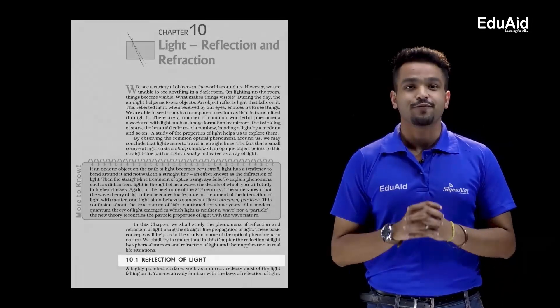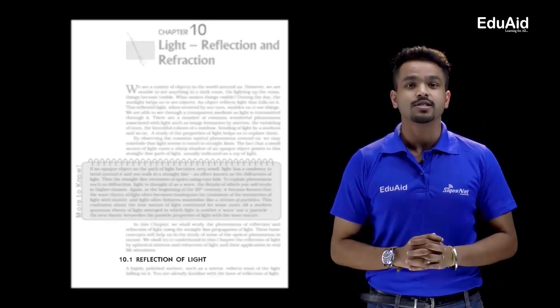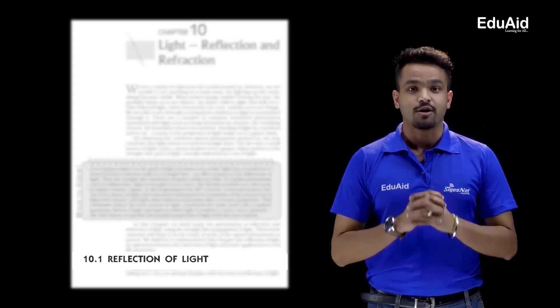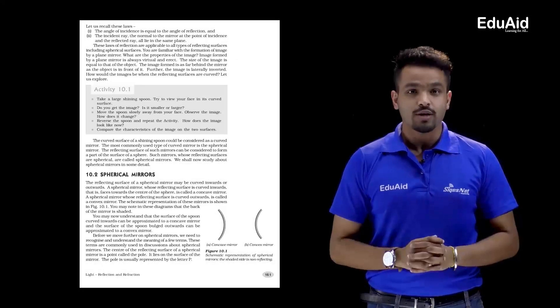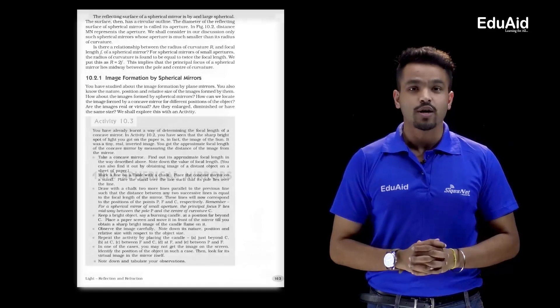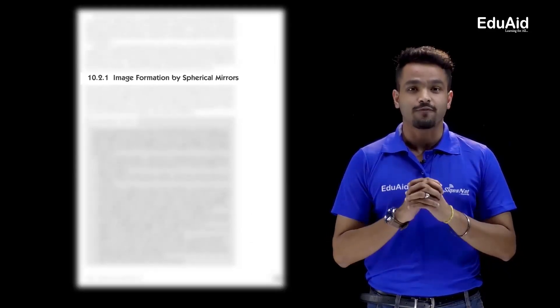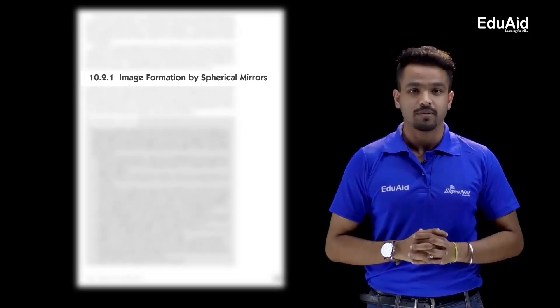Then we'll start with the introduction of the main chapter. Now let me take you through the PDF overview of the chapter. As you can see, the first part is topic 10.1, which is about reflection of light. Topic 10.2 is about spherical mirrors, and under spherical mirrors we're going to study topic 10.2.1, which is about reflection through spherical mirrors.